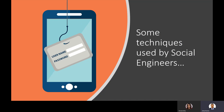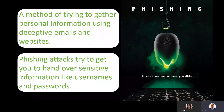Here are some techniques used by social engineers. Phishing is the first and most common — it's a method of trying to gather personal information using deceptive emails and websites. Phishing attacks try to get you to hand over sensitive information like usernames and passwords. Think of fishing in a lake: they're throwing a hook out there, hoping you click on something or open up their website to give them access to your information.